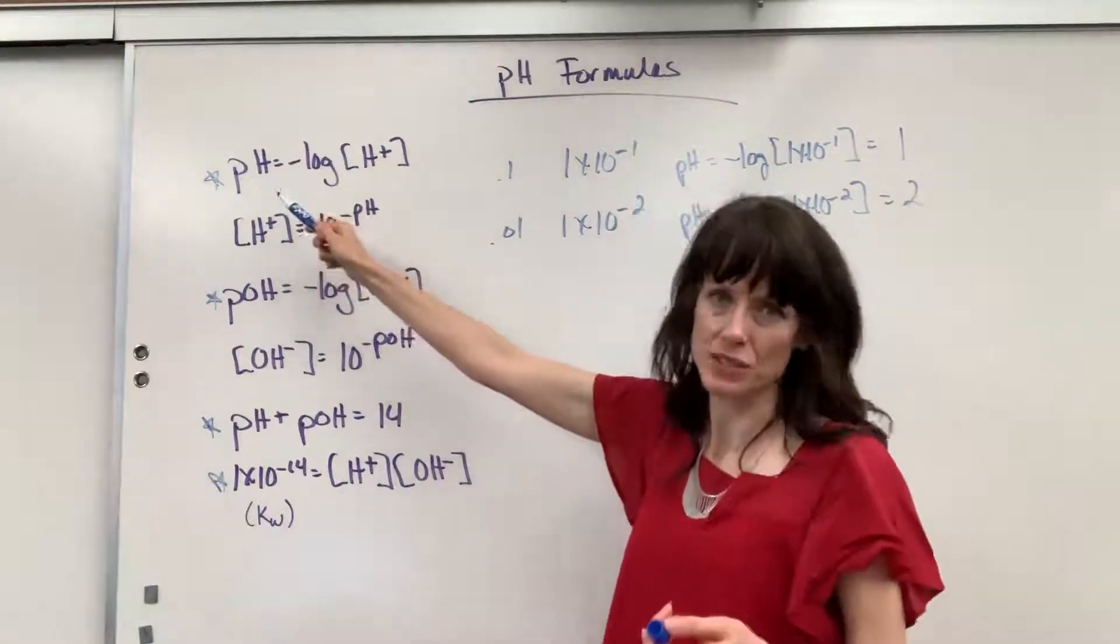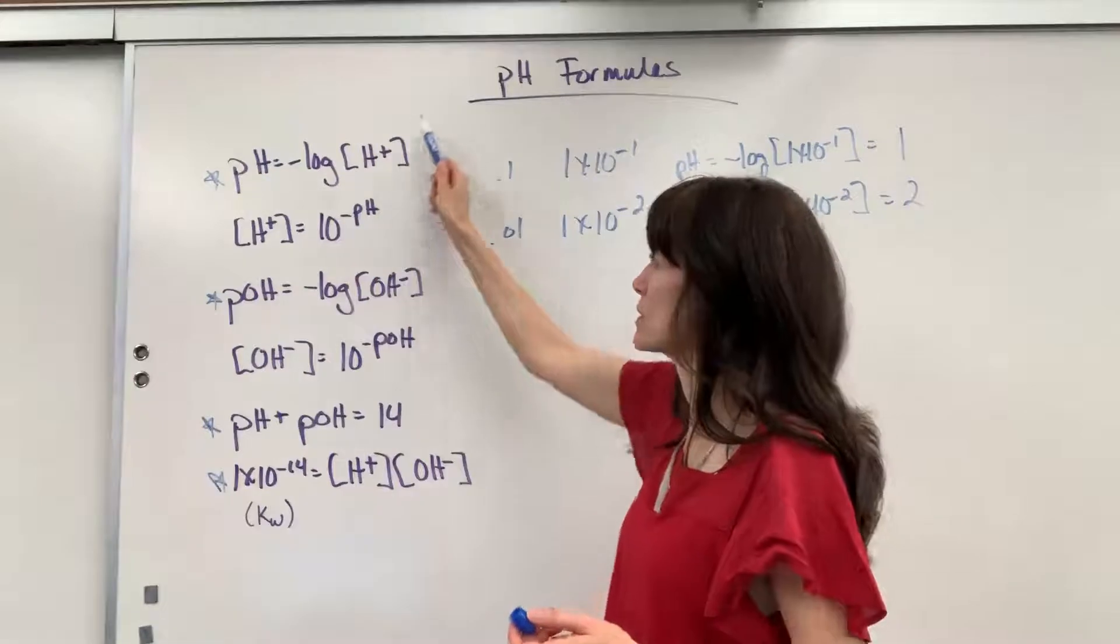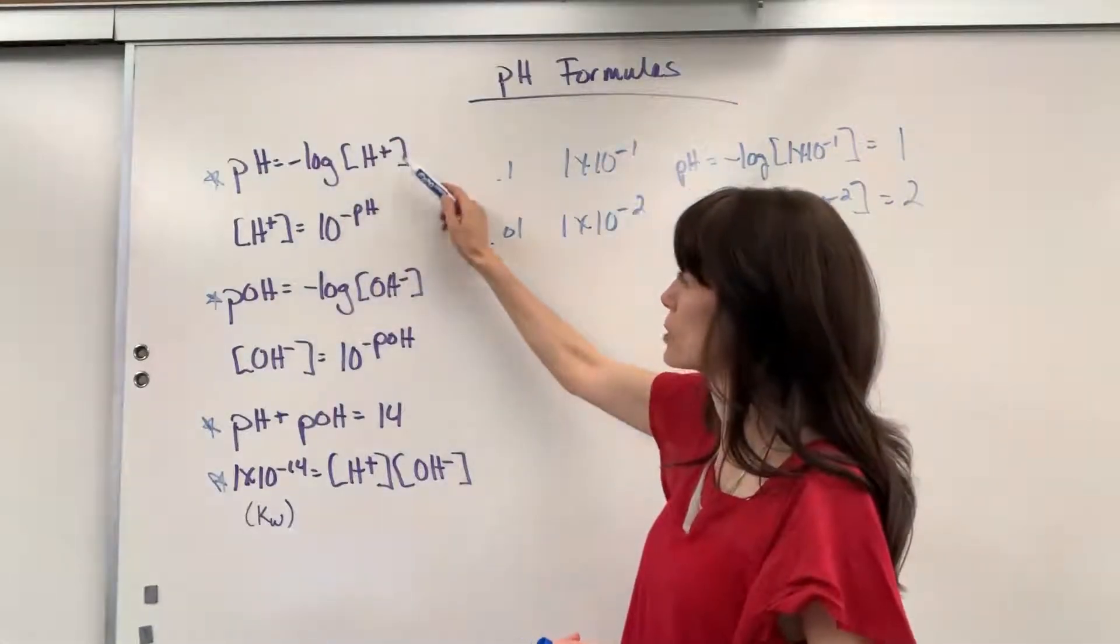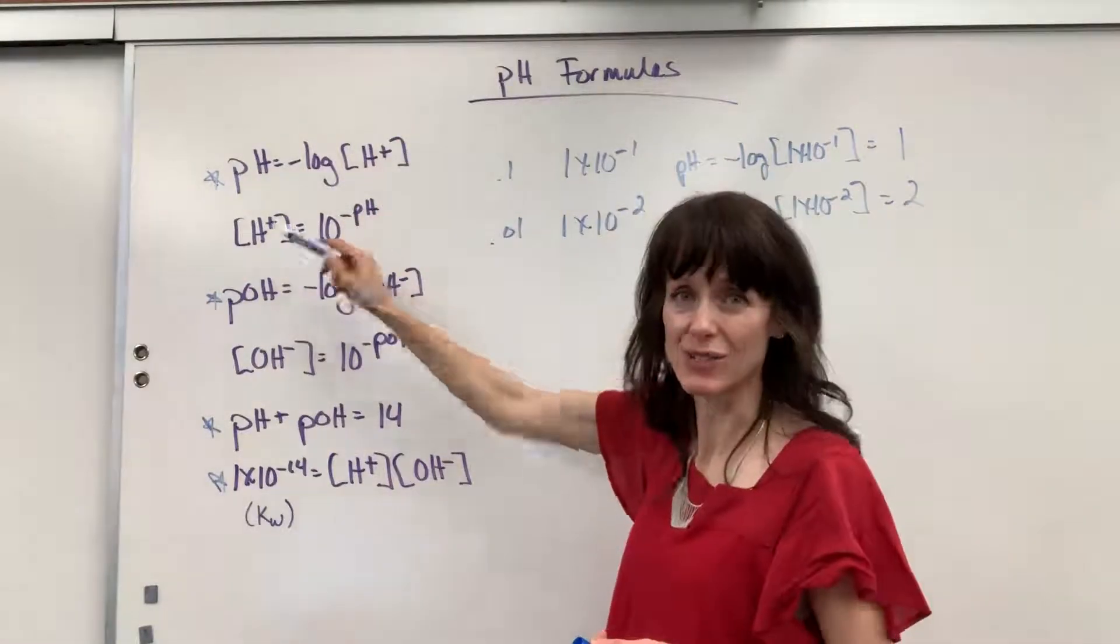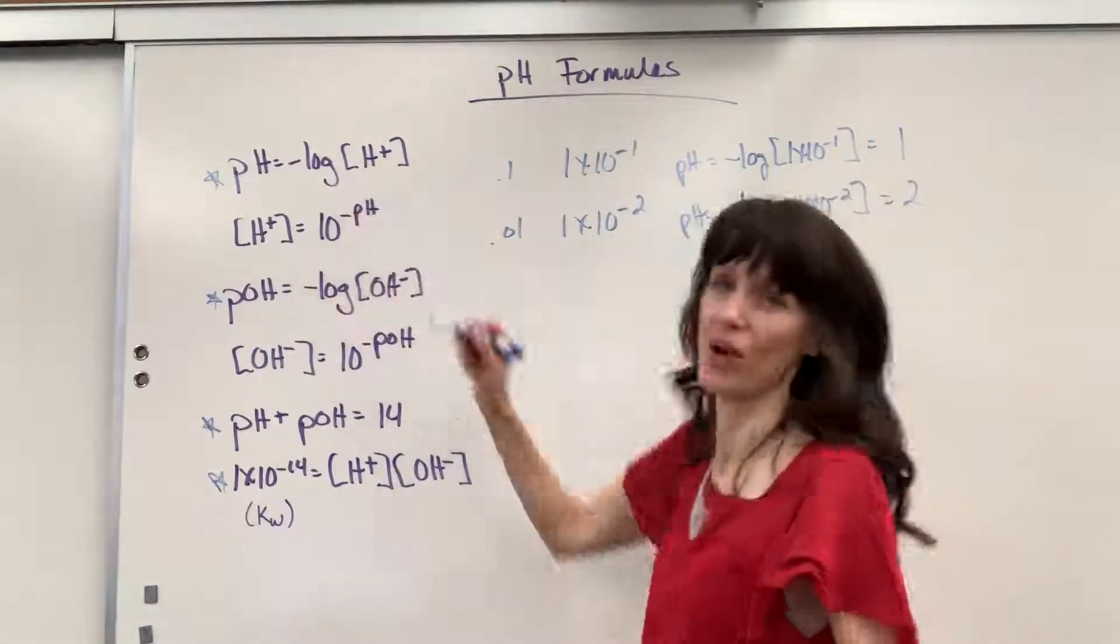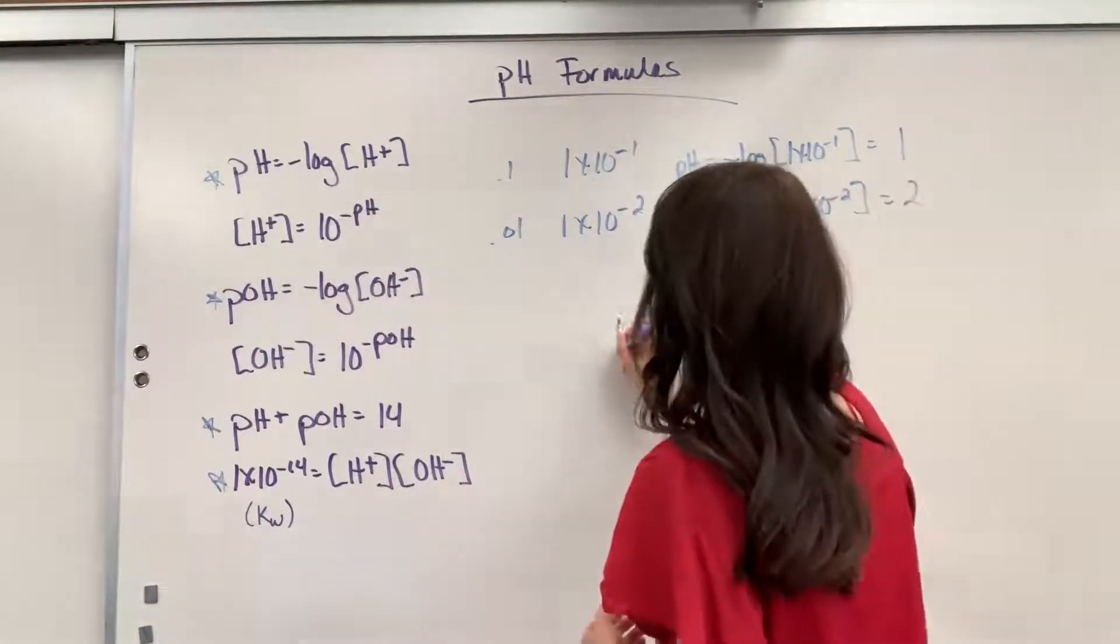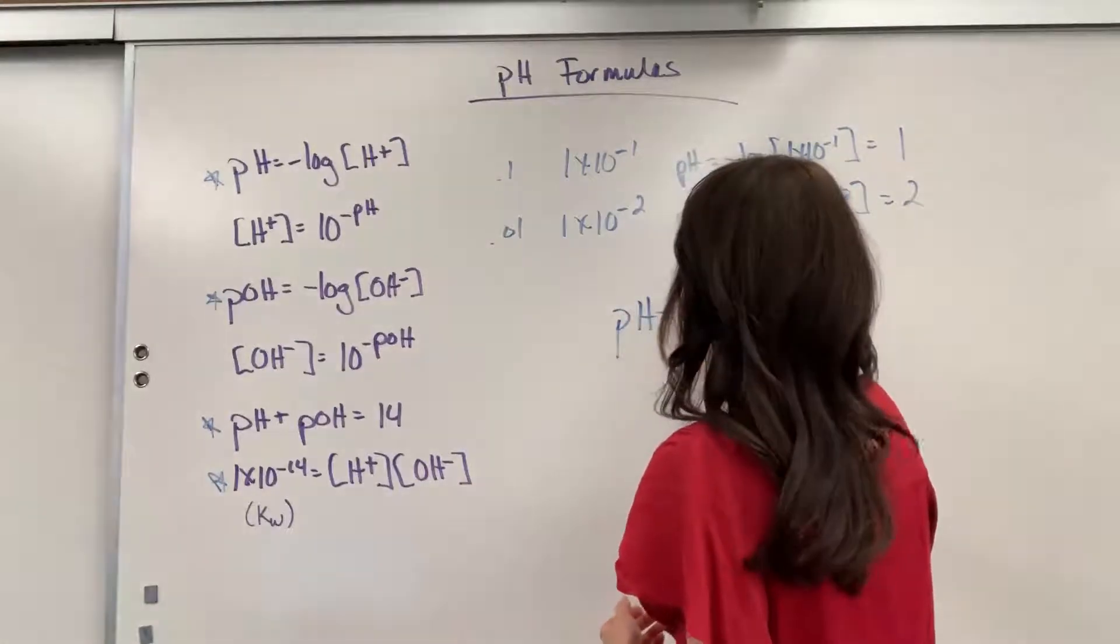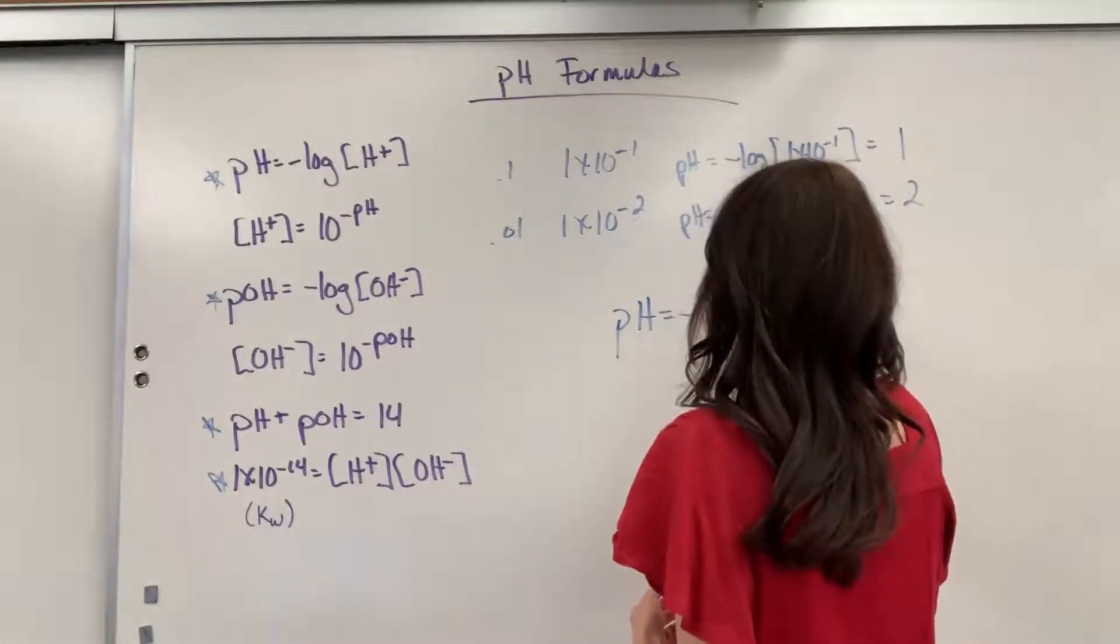So, I want to show you how to derive, it's super easy. pH equals negative log of hydrogen concentration, how to solve this for just hydrogen concentration. So, we have to unlock that log. It's called the anti-log.